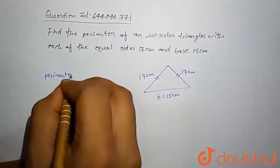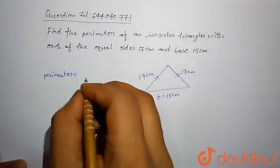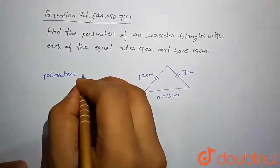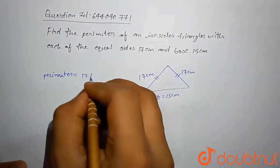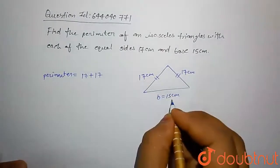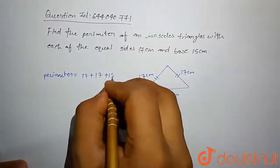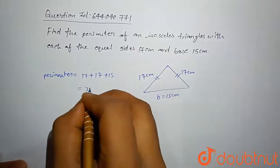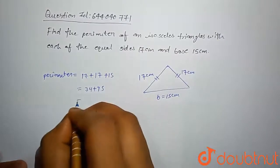17 plus 17 plus 15, which is equal to 34 plus 15, which is equal to 49 centimeter. This is our perimeter of this isosceles triangle.